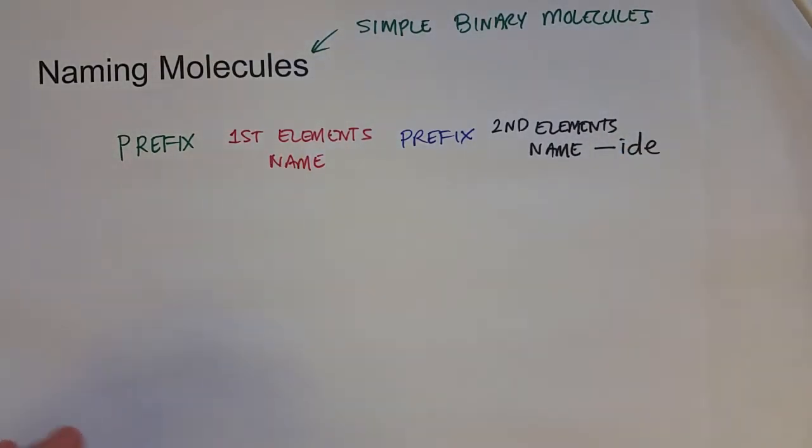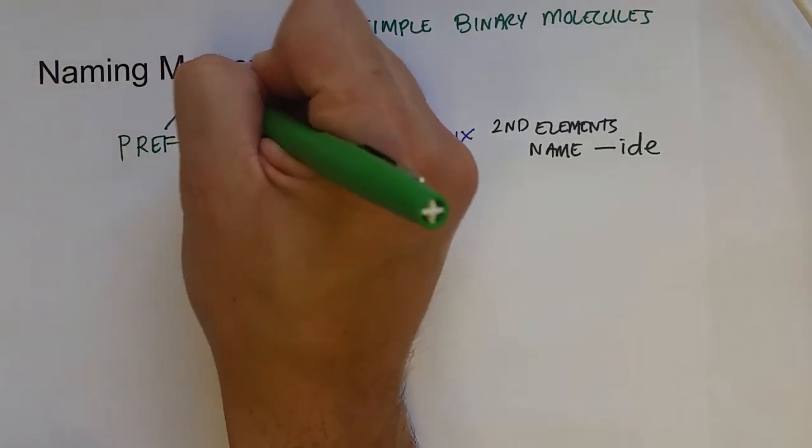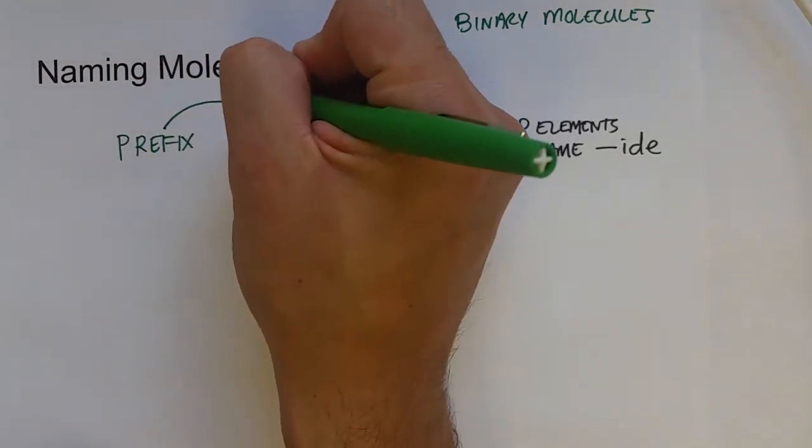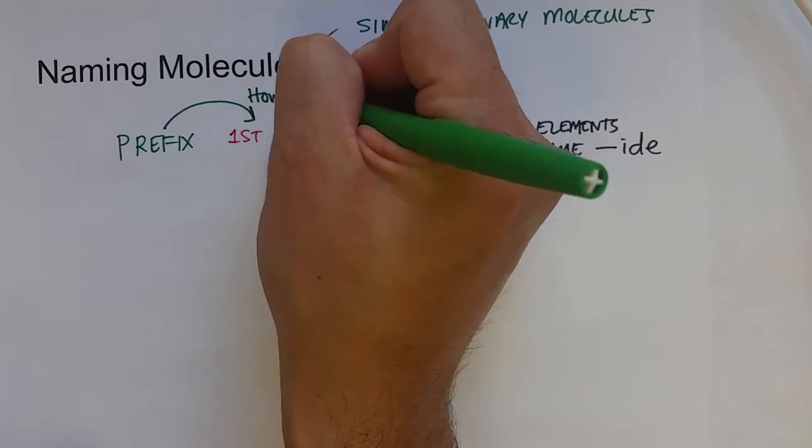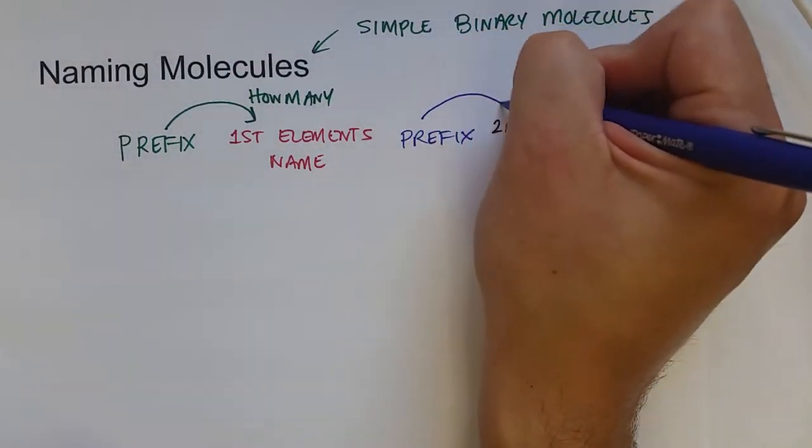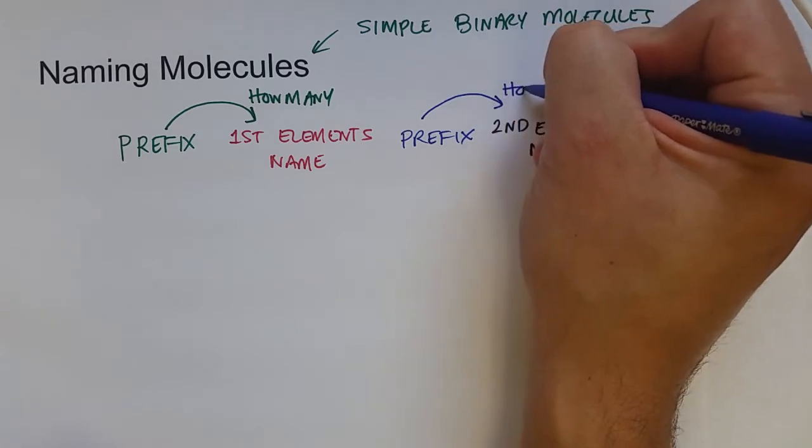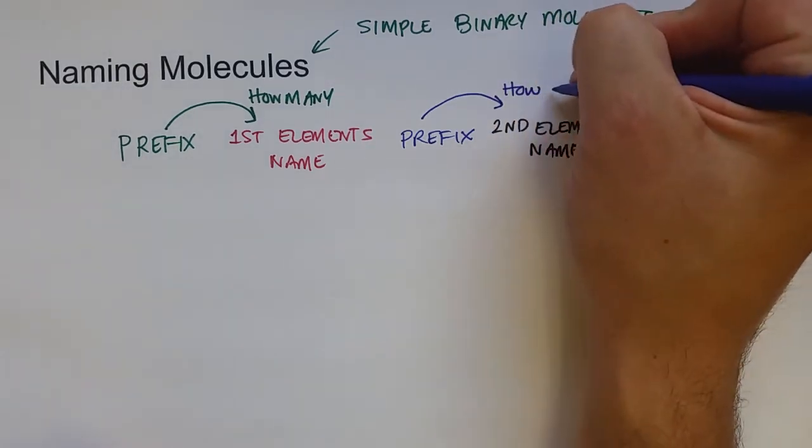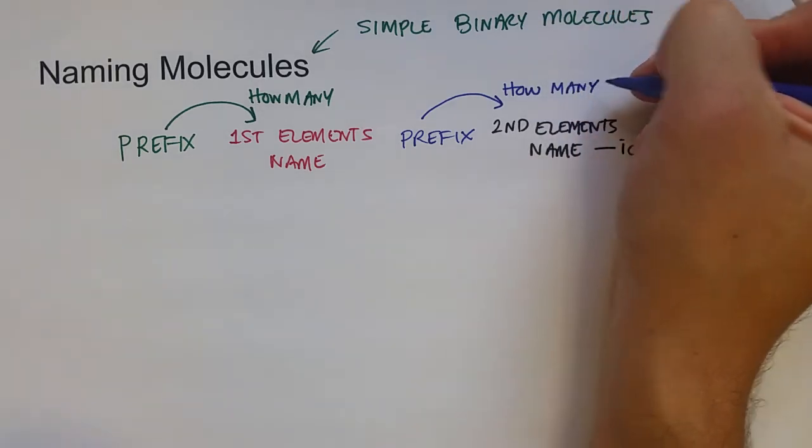What is the prefix for? The prefix is to tell you how many of the first element we have, and the second prefix is to tell you how many of the second element we have. Because again, these atoms don't have charges, and so we can't figure that information out just from the formula.